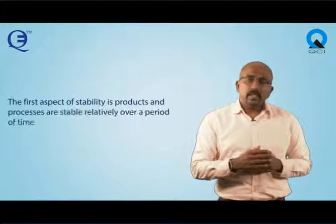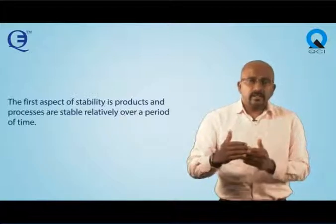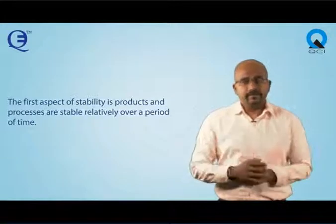The first aspect of stability is that products and processes are relatively stable over a period of time. Anyone implementing Kanban knows that it takes time to implement, and the number of disruptions to flow are huge. Further, as inventory levels start reaching the target of low inventory, the sensitivity to disruption goes up — the Kanban system starts becoming very sensitive to disruption.